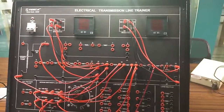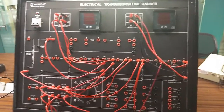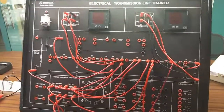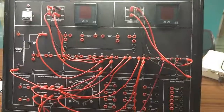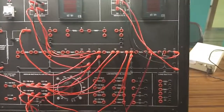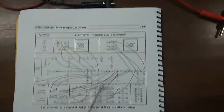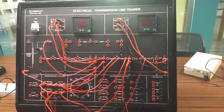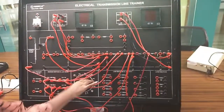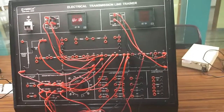Our next experiment is to determine the A, B, C, D, Z and image parameters of a medium transmission line for the T-network. First we will do the open circuit output terminal test. This is the circuit diagram and connection for this experiment; we have built the connection exactly as shown in the figure. First we will turn on the trainer kit.